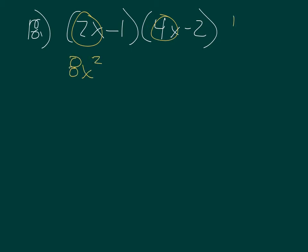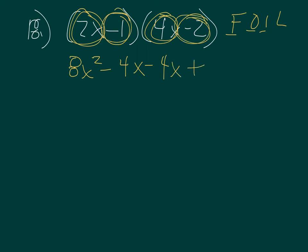Eighteen. Another one just like it, except now we have numbers in front. 2x minus 1 times 4x minus 2. First is 2x and 4x gives me 8x squared. Outers are 2x and negative 2, which gives me minus 4x. Inners are minus 1 and 4x, minus 4x. Lasts are minus 1 and minus 2, which gives me positive 2. Combined like terms, 8x squared minus 8x plus 2.